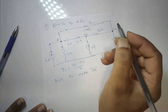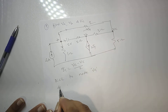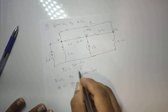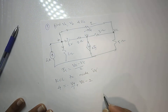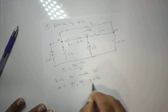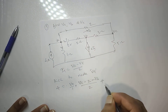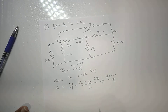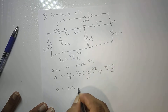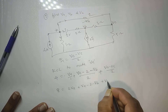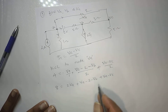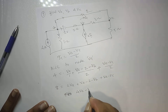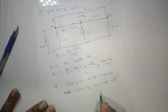At node VA, four branches are connected. The current flowing to this branch we assume is outgoing. Only 4 amperes is entering. Current in the first branch is VA by 1. Current in the second branch is VA minus 2 minus VB divided by 2 (moving from positive to negative through the 2V source). Current in the third branch is I1, which equals VA minus VC by 2. Taking LCM of 2 gives 8 equals 2VA plus VA minus 2 minus VB plus VA minus VC, which simplifies to the first equation: 4VA minus VB minus VC equals 10.